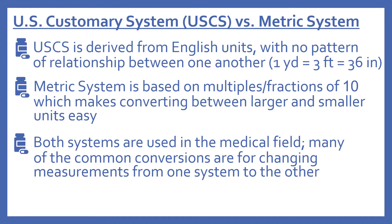Now we'll look at the different systems of measurement. There's the U.S. customary system and the metric system. These are two systems of measurement that are commonly seen. The United States customary system is derived from English units with no pattern of relationship between one another. This is the one most of us are familiar with — one yard equals three feet equals 36 inches. There's not really a pattern of numbers for equivalents.